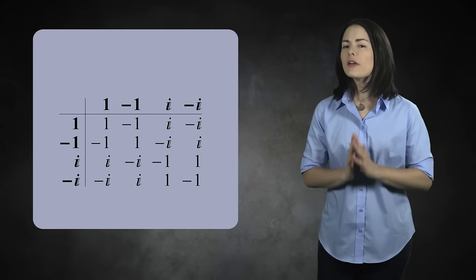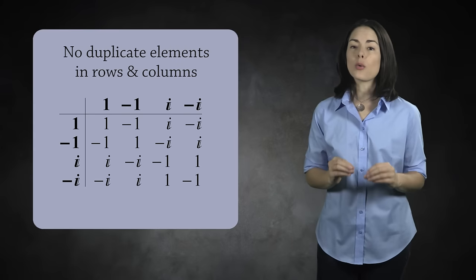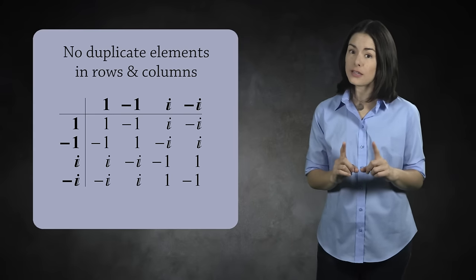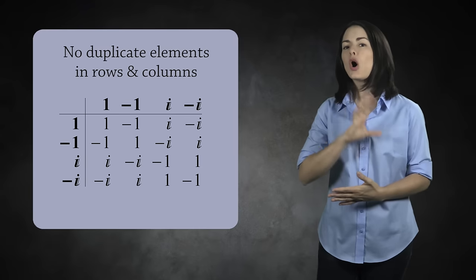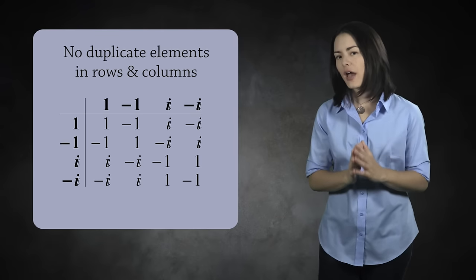There is another very important property of this multiplication table. There are no duplicate elements in any row or column. We're not counting the headers. Each row and each column contain all the group elements in some order. Let's prove that this happens for every group.